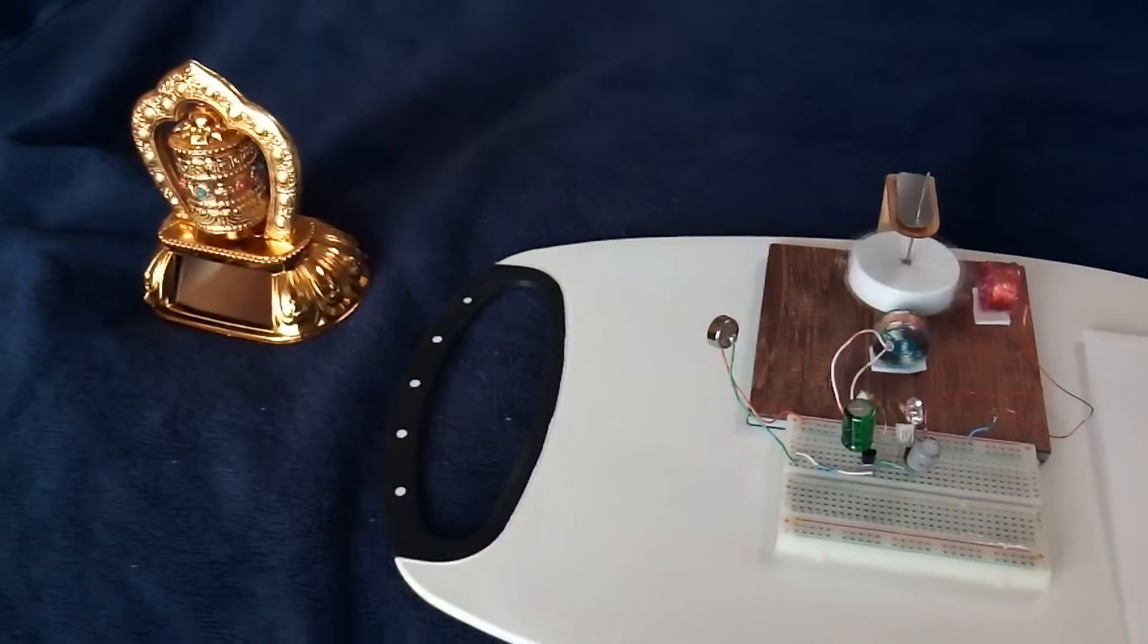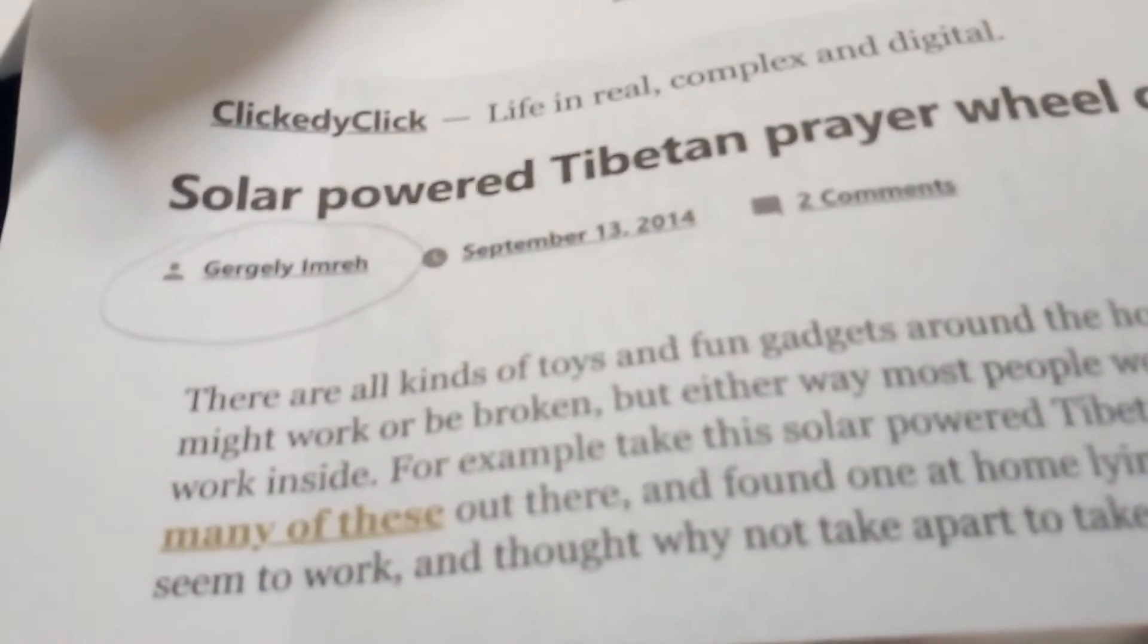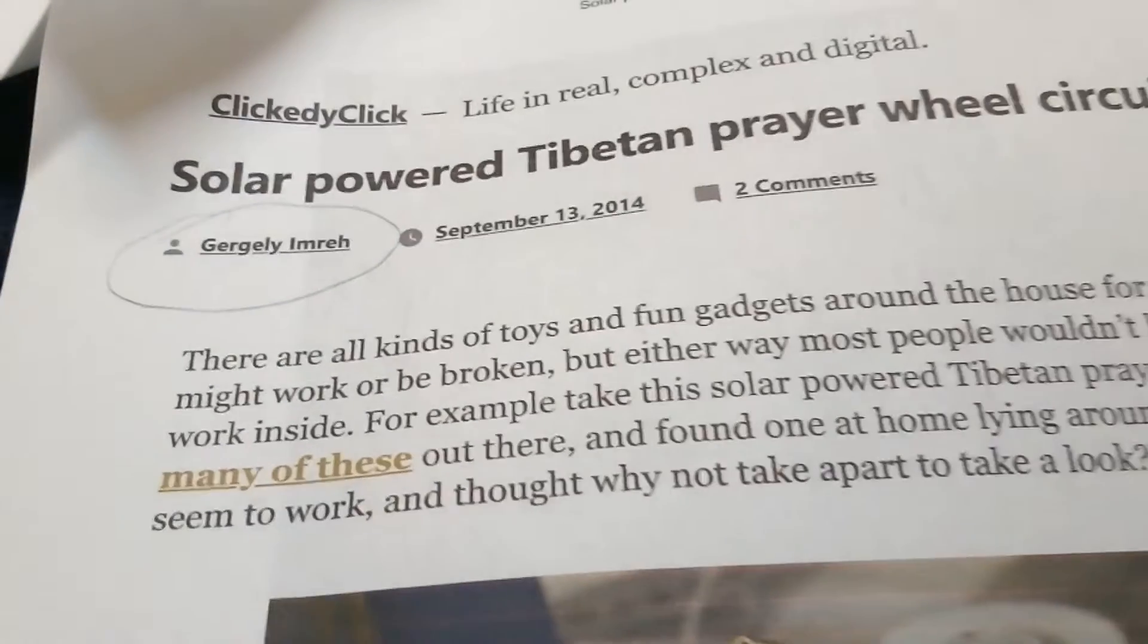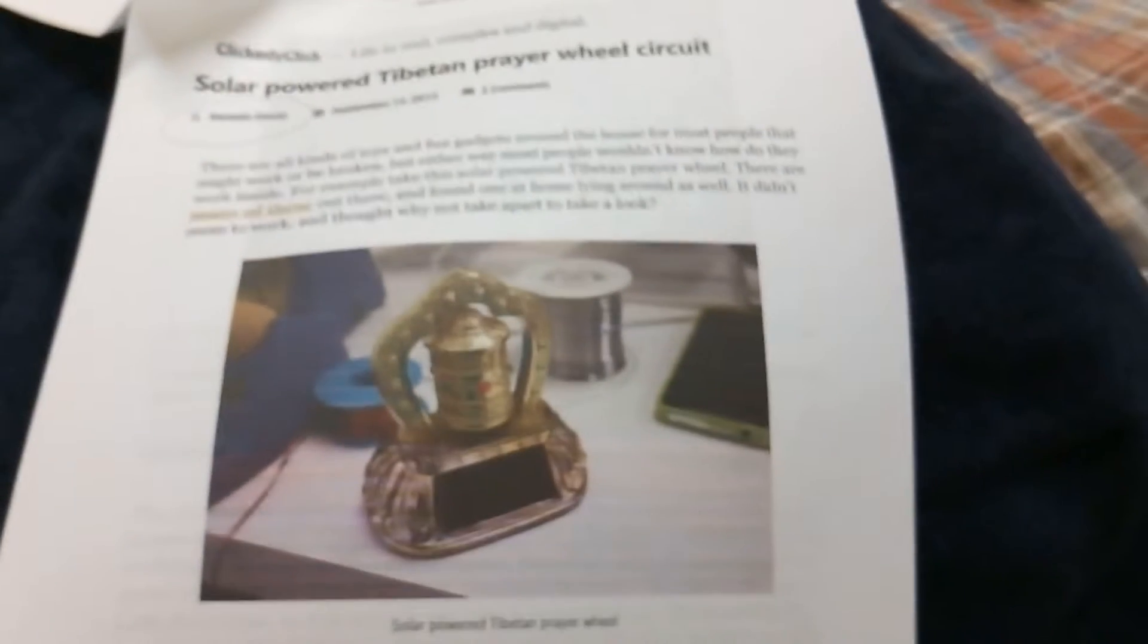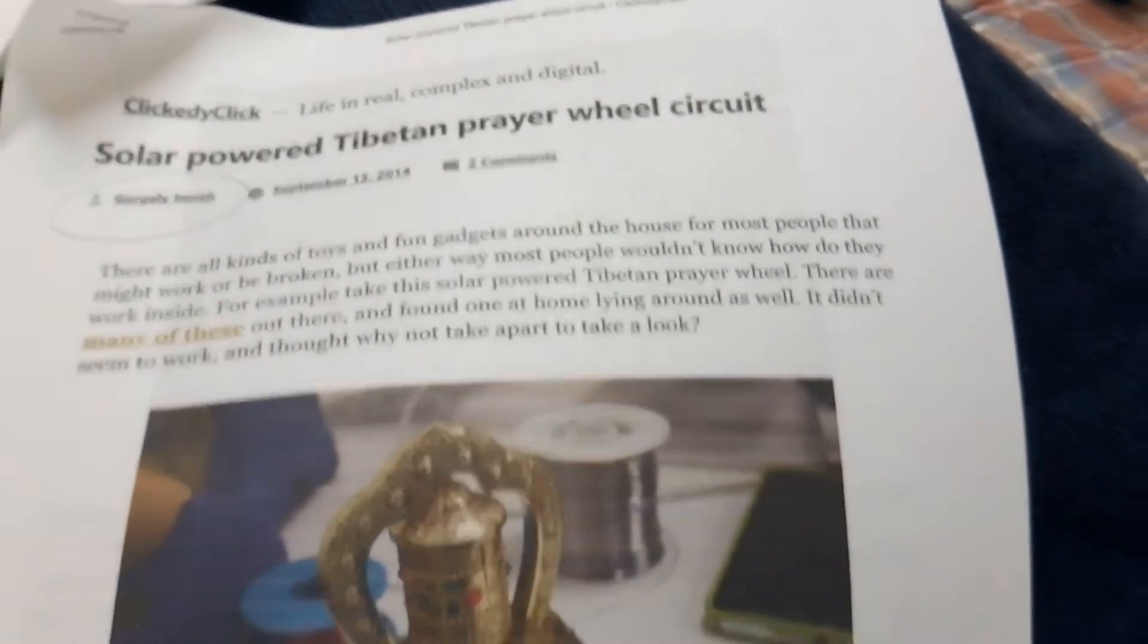And I did some research and I ordered one, and there was a guy, his name is Gergerli Imra, sorry if I didn't pronounce his name right, that hacked this and took it apart. And it's called the Solar Powered Tibetan Prayer Wheel Circuit.